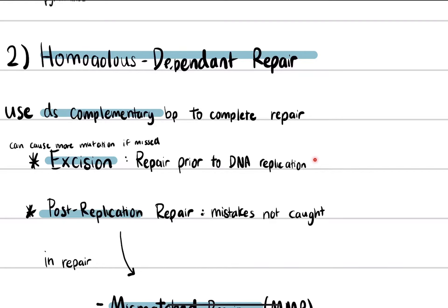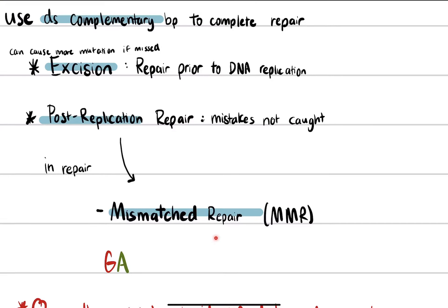If a mutation is missed by excision repair, it gets replicated, which increases the chance of more mutations being formed. That is why we have post-replication repairs, which address mistakes not caught earlier. For example, we can have a guanine paired with an adenine — which is not correct. Guanine should bond with cytosine, and adenine should pair with thymine.